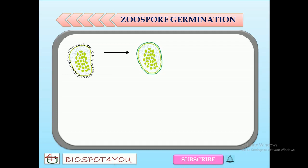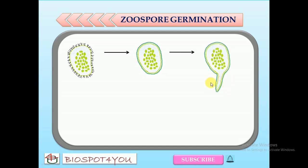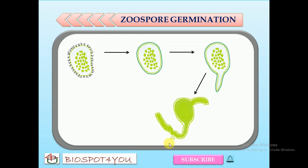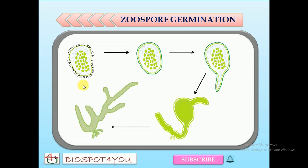Then a thin cellulosic wall is deposited over the zoospore. Later, one or two tubular outgrowths develop from the zoospore. From one of the tubular outgrowths, a colourless rhizoidal region develops, and the other grows into a yellowish-green thallus.